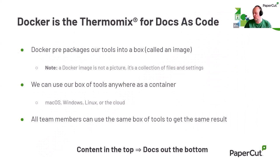Docker is a similar thing for docs. Docker allows us to prepackage our tools — static site generators, linting tools — and put them all into a thing called an image, which is basically a box. An image is a Docker technical term for a box of files used to run things — it's not an actual picture-type image. Once we have our box of tools, we can use it anywhere: on a Mac, Windows machine, Linux machine, or in the cloud. It behaves exactly the same way. The concept is: content in the top, process it through a Docker container, and you get final documentation at the bottom.